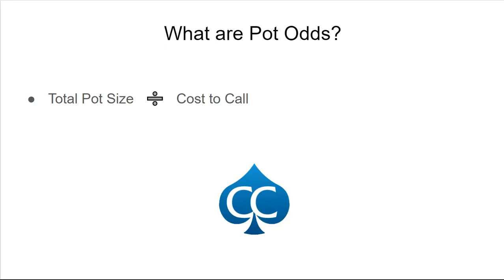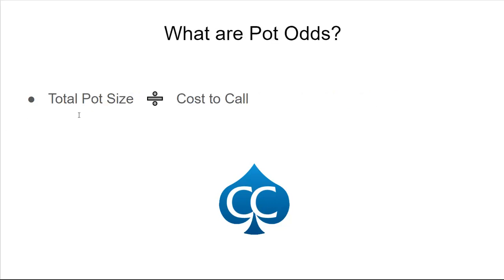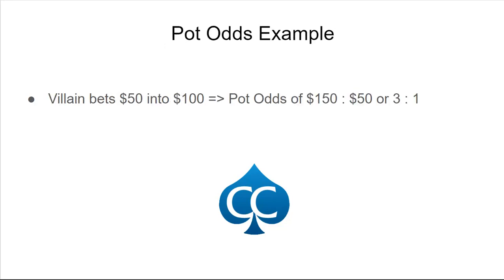Let's look at an example of Pot Odds. Our opponent bets about 50 into a pot of 100. If the pot size displays as 100 bucks and your opponent bets 50 bucks, then for this definition, total pot size is the existing pot plus what your opponent has bet. So once he bets 50 into 100, there's 150 in the middle, and so your Pot Odds are going to be 150 total pot to 50, which is the cost to call.